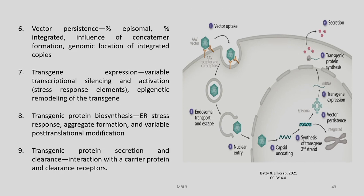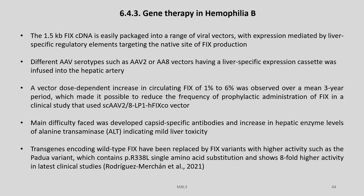Vector persistence — including percentage episomal, percentage integrated, influence of concatamer formation, and genomic location of integrated copies — all play important roles. Transgene expression is affected by variable transcriptional silencing and activation, stress response elements, and episomal remodeling. Transgene protein synthesis, ER stress responses, aggregate formation, and variable post-translational modification also play important roles, along with secretion, interaction with carrier proteins, and clearance receptors.